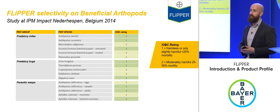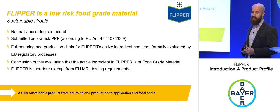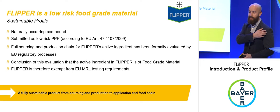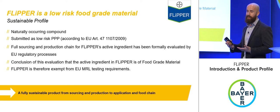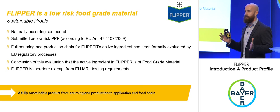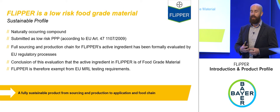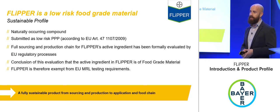To summarise: Flipper contains a naturally occurring compound submitted as low-risk, with results expected soon. Its whole sourcing and production process is formally evaluated by the EU, and as a food-grade, MRL-exempt material it has a very clean regulatory profile.